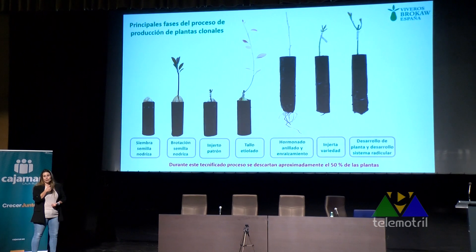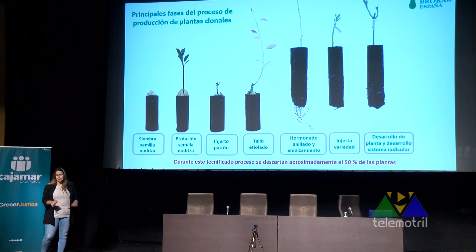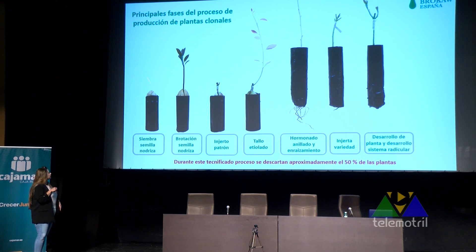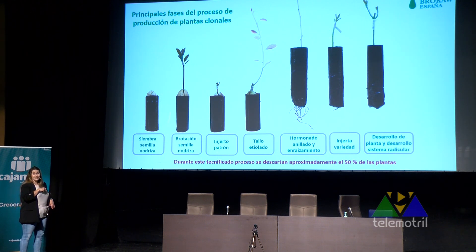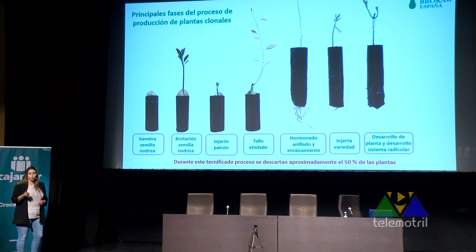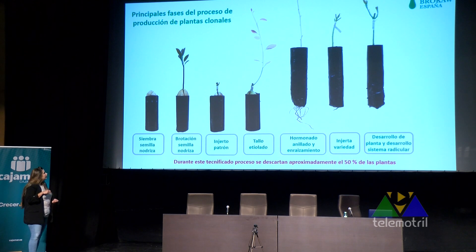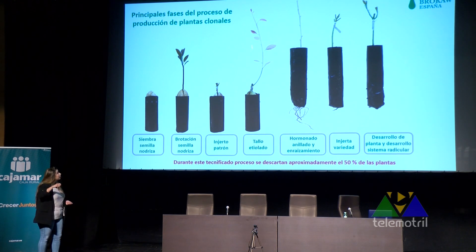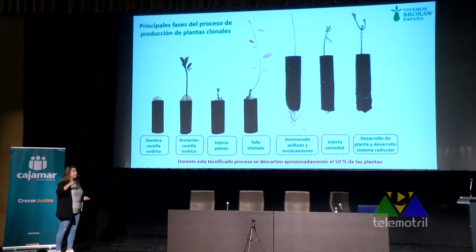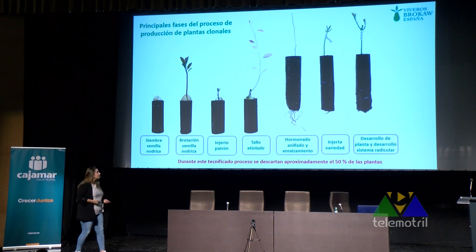Partimos de una semilla que vamos a utilizar simplemente como molde, como motor de energía; esta semilla al final va a desaparecer. En un aguacate convencional directamente la injertaríamos. En el proceso clonal, injertamos la púa de patrón clonal —un Dusa, un Duque 7, un Toro— y una vez que ha brotado y tiene una yemita la metemos en una cámara de etiolación. El árbol va a estar aproximadamente un mes en esta cámara y va a crecer sin clorofila, con el tallo blanco por haber crecido sin luz, lo que va a favorecer mucho el enraizamiento.